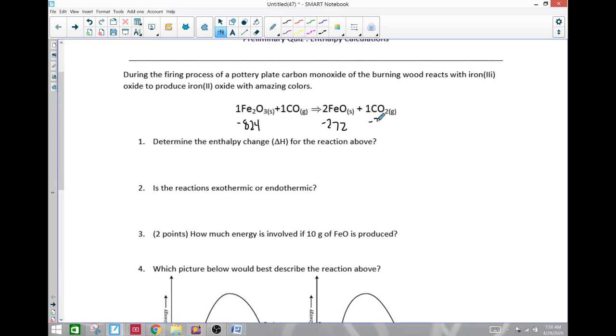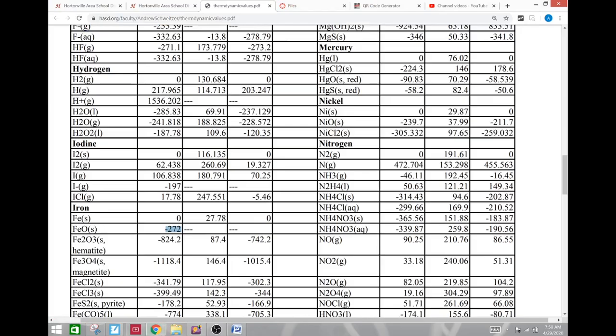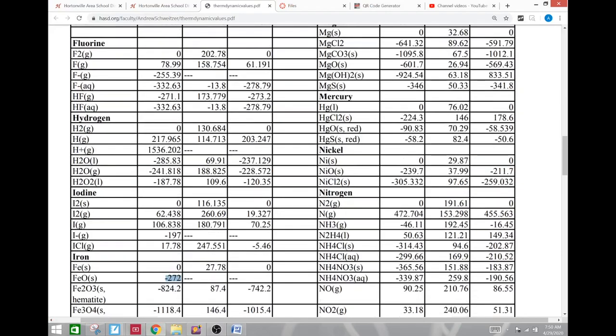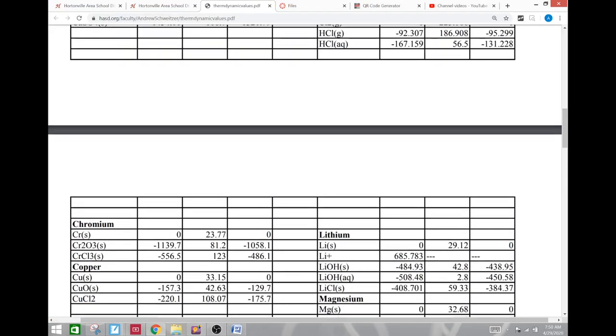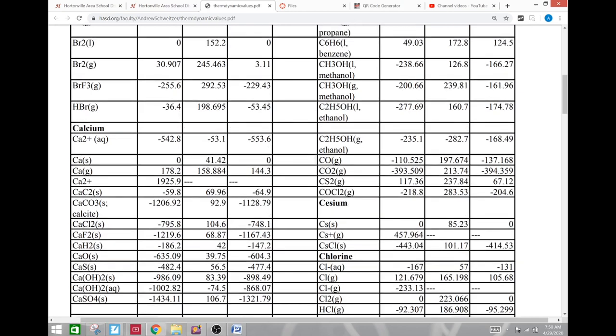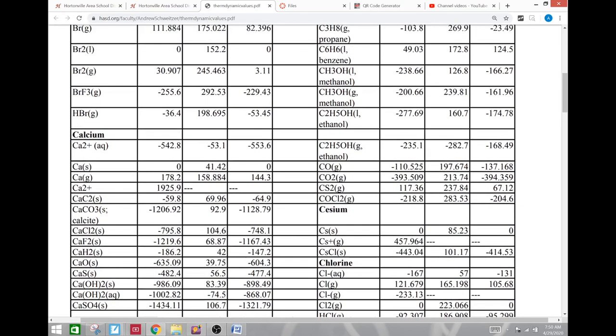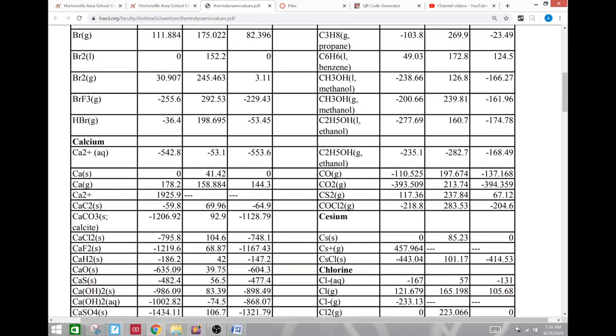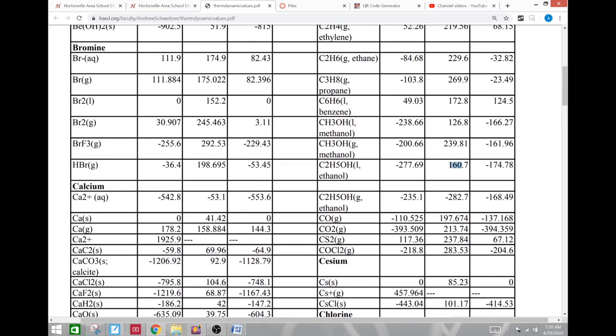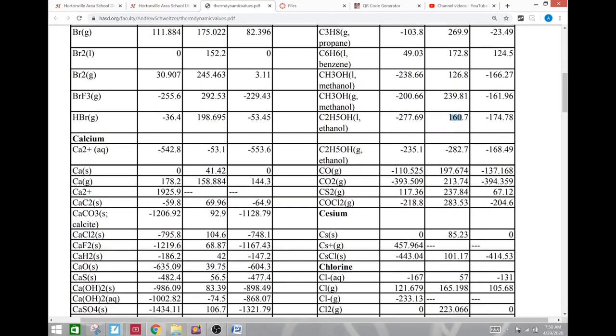Negative 272. Carbon dioxide gas is negative 393. Carbon monoxide gas, I don't know, let's go check that one. Carbon monoxide, let's see if it's under carbon. Alright, hopefully we can find it easily here. There we go. So right here is that negative 393 that I just put up there, and above it is the negative 110.